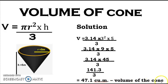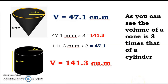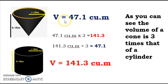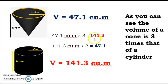That gives the volume of the cone, which is 47.1 cubic meters. Now let's look at the relationship between the cylinder and the cone. With the same measurements — radius 3 meters, height 5 meters — the volume of the cone is 47.1 cubic meters while the cylinder is 141.3 cubic meters. If you multiply 47.1 times 3, you get 141.3, which is the volume of the cylinder.